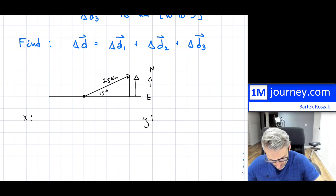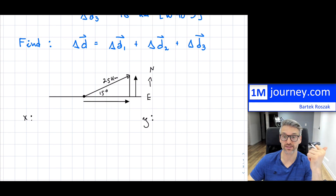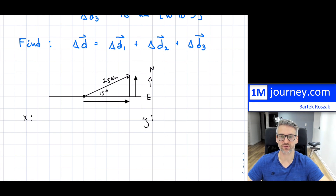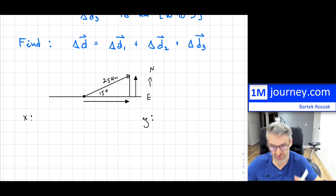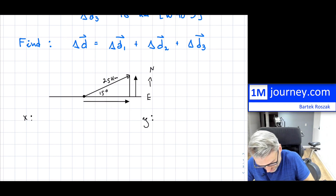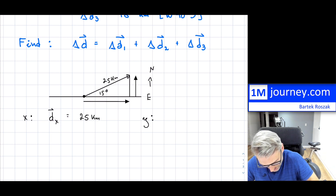We're going to draw a triangle because I want to get the X component and the Y component of this vector. We know this is 25 kilometers as the hypotenuse. Now, both components will be positive — X is to the right, which is positive, and Y is up, which is also positive. That's simply by convention.